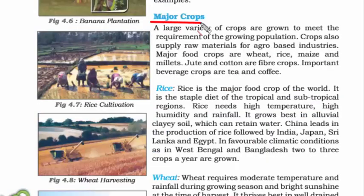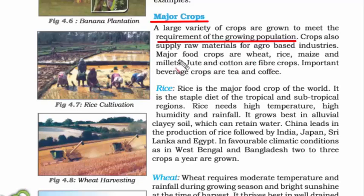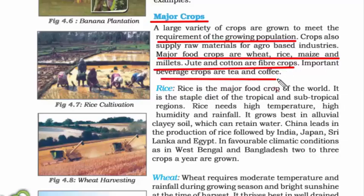Major crops are those grown to meet the requirement of the growing population. Some of the major food crops are wheat, rice, maize, and millets — we eat these. Jute and cotton are fiber crops — we don't eat them; we use them to make products like bags and cloth. You must have heard of jute bags and cotton cloth. Then we have beverage crops that are drinkable, like tea and coffee.